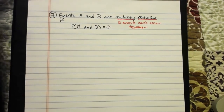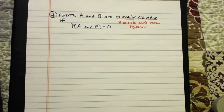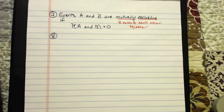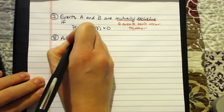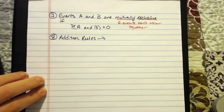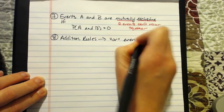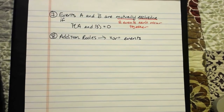Why do we care about mutual exclusivity? Well, there is rule number 8. These are our addition rules. Addition rules are what you will use to calculate probabilities for OR events. If you want to link together two or more events using the logical connective OR and find the probability of that occurring, you'll use these addition rules.